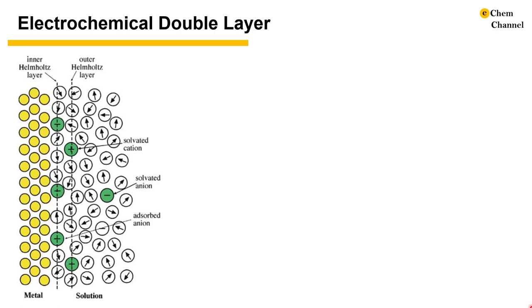The similarity between the space charge layer and the double layer is that they both arise in response to charged surfaces. However, due to the difference between solid solutions and liquid solutions, the model of the double layer has additional complications.